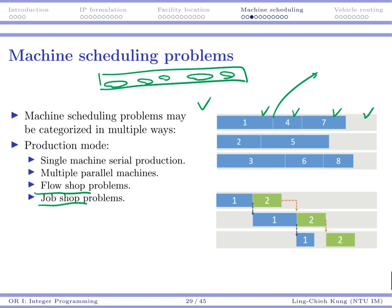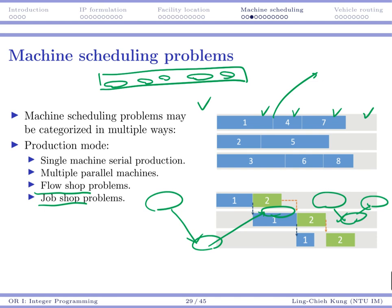It's also possible to have job shop problems. In that case, each job has a different order to go through, and a job may even need to go back to a particular stage to redo things. So you could say a job shop is a more flexible situation.